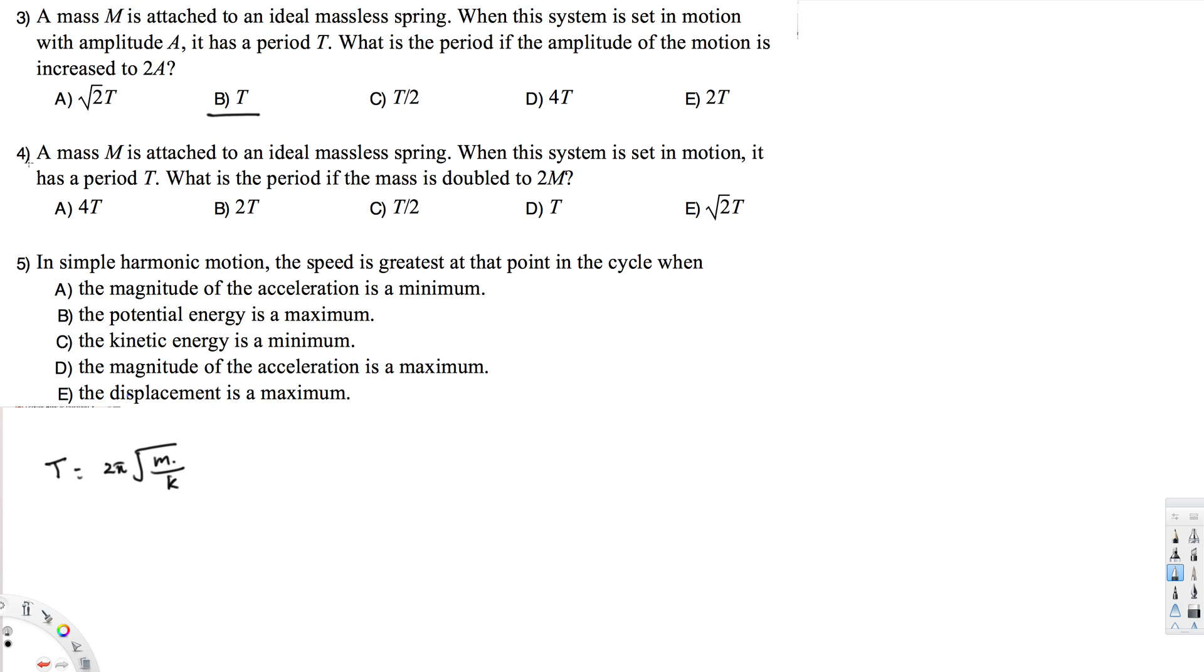The next one: a mass is attached to an ideal massless spring. When the system is set in motion, it has period T. What is the period if the mass is doubled to 2M? When period is T and mass is M, the equation is T = 2π√(m/k). What happens if they put 2M?